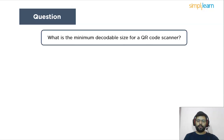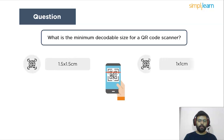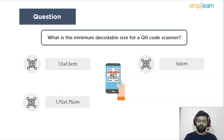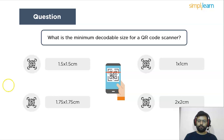Your question is: what is the minimum decodable size for a QR code scanner? Your options are: 1.5 by 1.5 centimeter, 1 by 1 centimeter, 1.75 by 1.75 centimeter, or 2 by 2 centimeter. You can pause the video, give it a thought, and answer in the comment section.